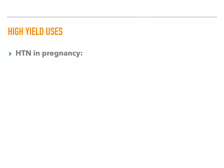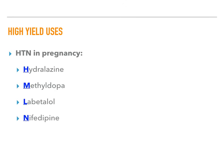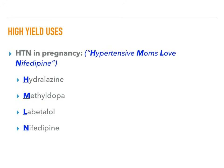We're going to start with some high-yield uses. If you have a patient who's pregnant and hypertensive, you need to know what drugs you can and cannot give them. There are four drugs you can use to treat high blood pressure in a pregnant patient: hydralazine, methyldopa, labetalol, and nifedipine. The mnemonic to remember this is 'hypertensive moms love nifedipine' — HMLN are the drugs you use to treat hypertension in pregnant patients.